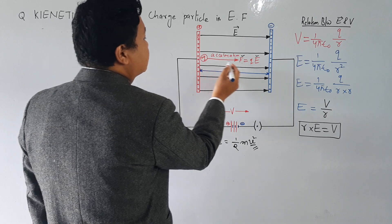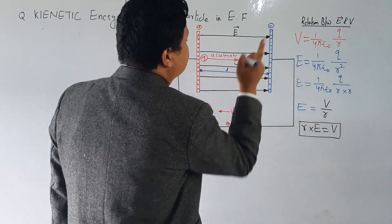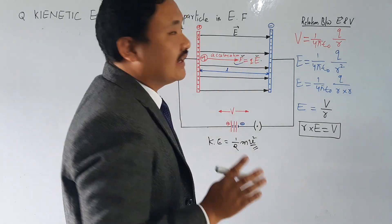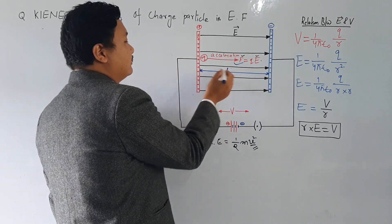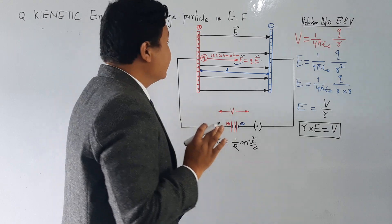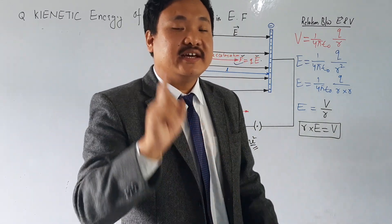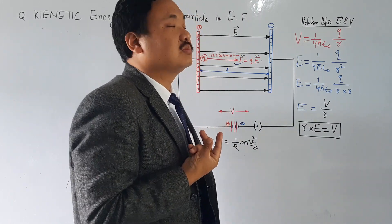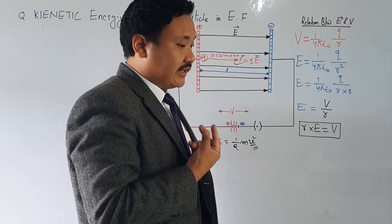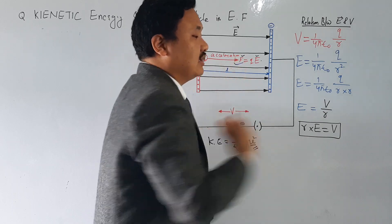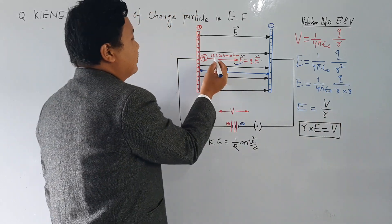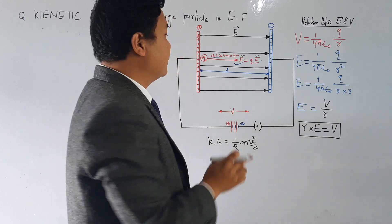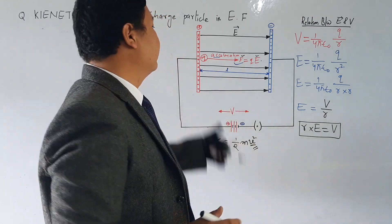Now it will go in this direction with force F equal to Q into E, where E is the electric field and F is the force. Let it travel a distance of L from this plate to that plate. There is acceleration because it was not moving initially — there is no initial velocity. The acceleration is A, the force is QE, and the length is L, which is the distance traveled by the positive charge.